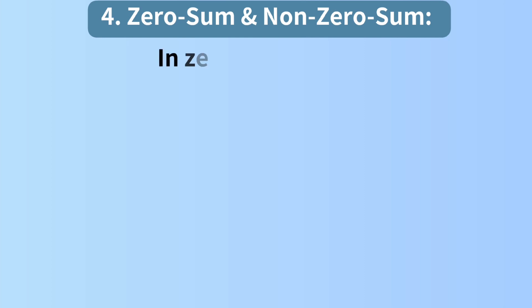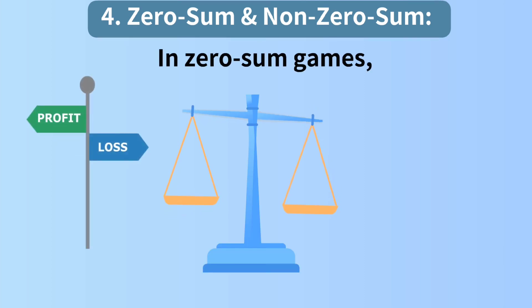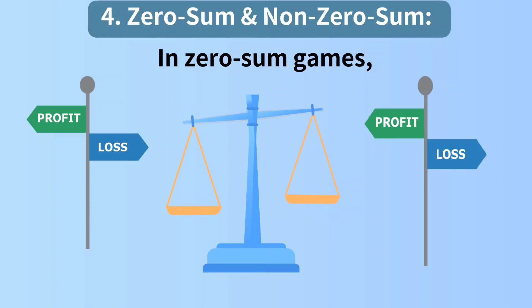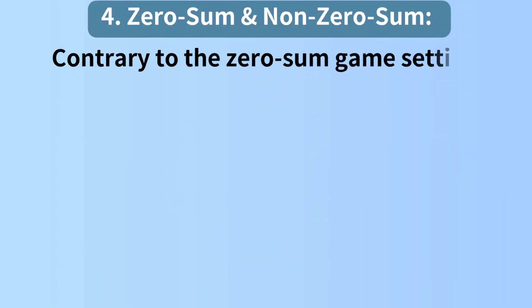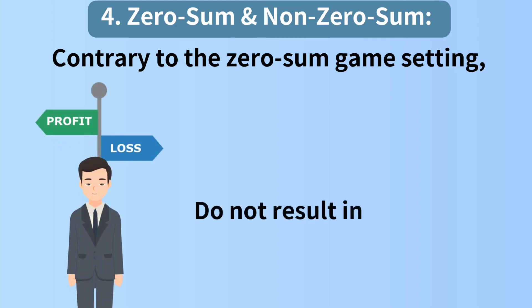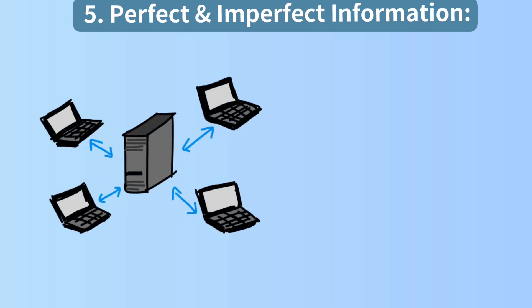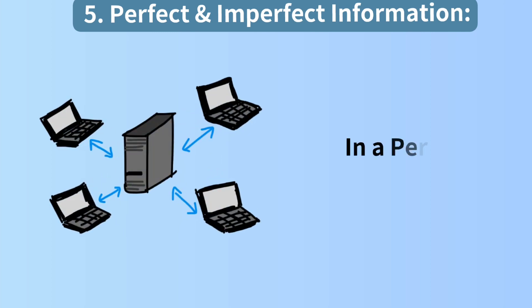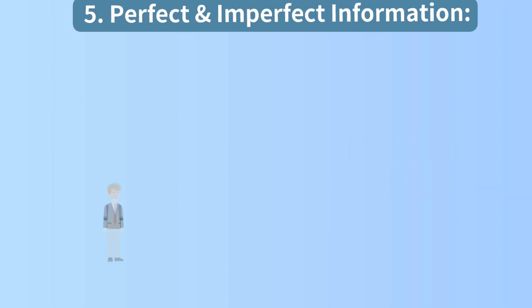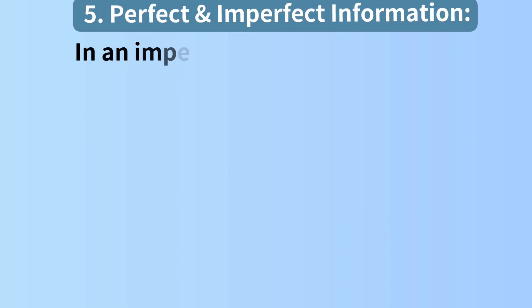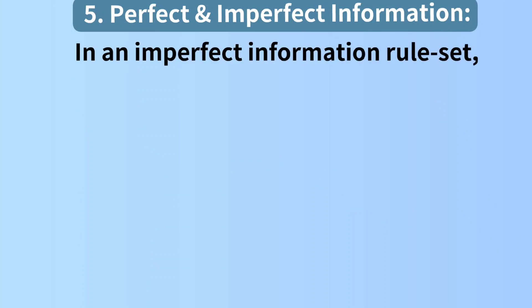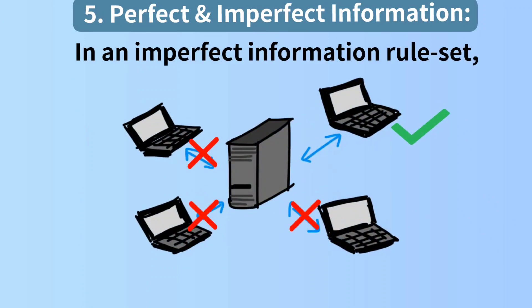Fourth, zero-sum and non-zero-sum. In zero-sum games, a participant's gains or losses balance other participants' gains or losses. Contrary to the zero-sum game setting, a player's gains or losses do not result in other players' gains or losses in a non-zero-sum game. Fifth, perfect information and imperfect information. All participants have access to the same information in a perfect information setting and make their decisions based on that data. However, in an imperfect information rule set, the data available to one player is unavailable to other participants.